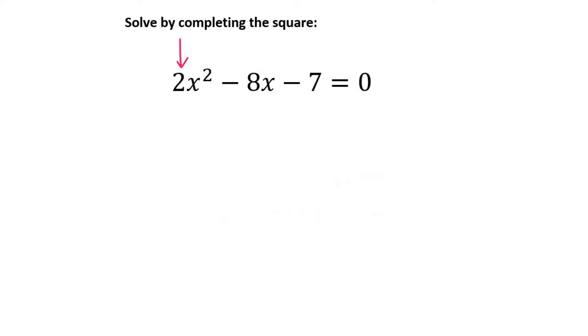So we need to divide everything by 2. So that's going to let us end up with x squared minus 4x, because I divided by 2, and then minus 7 over 2. See how I did? I divided everything by 2.